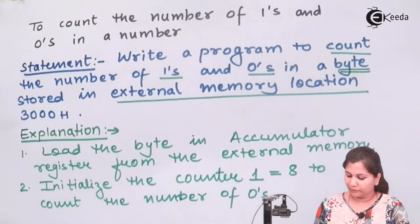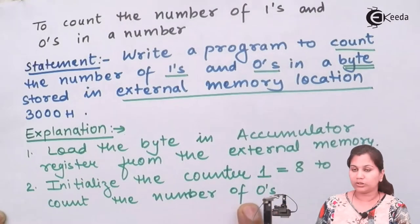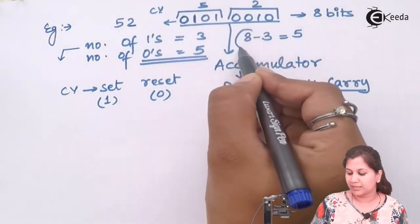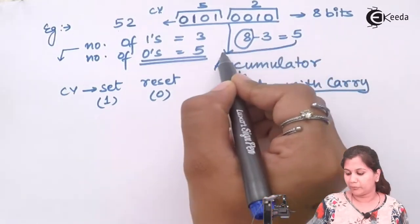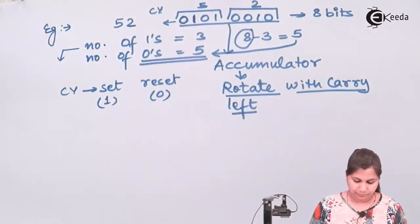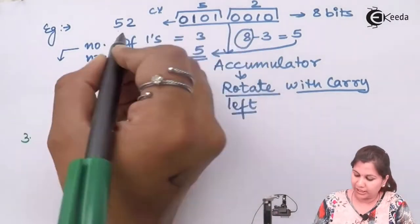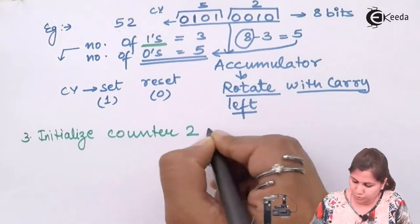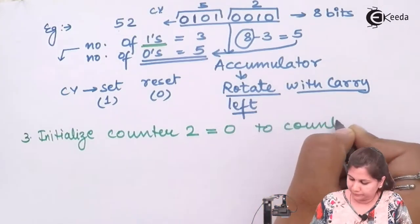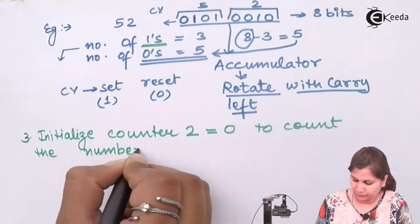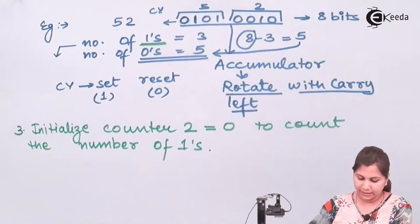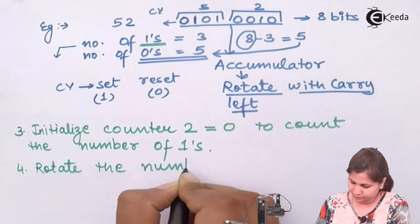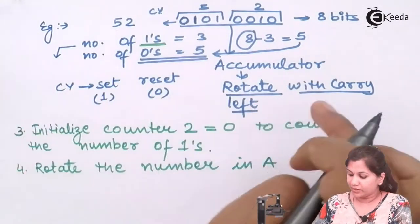In the second step, counter 1 is initialized with 8 to track how many bits remain to be checked. For counting 0s, there is no need for a separate counter — just initialize to 8 and subtract the number of 1s to get the number of 0s directly. The third step is to initialize counter 2 as 0 to count the number of 1s. Next, we rotate the accumulator to the left side with carry.